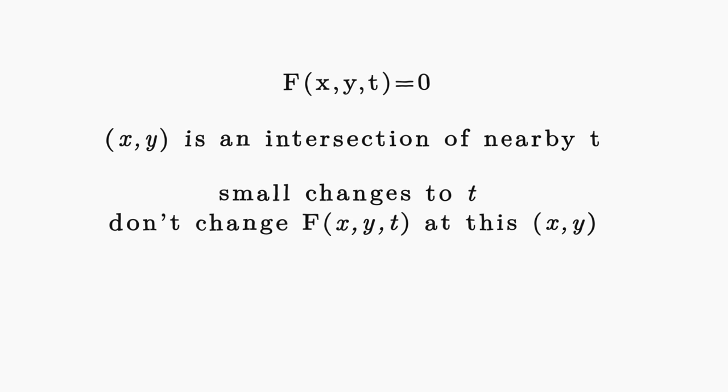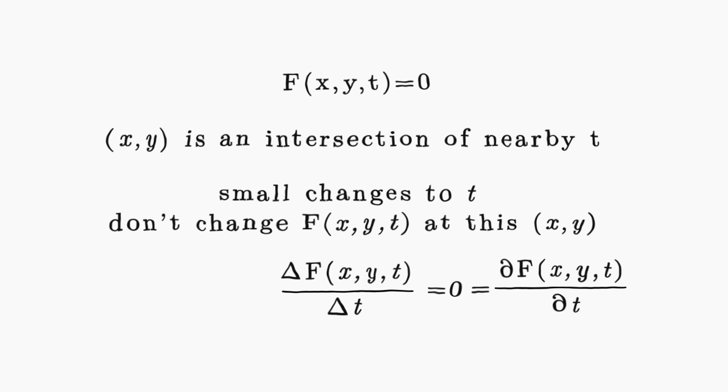So if for this point, small changes in t result in small changes in x and y, well, we're comparing a small change in f to a small change in t. That comparison, that's a derivative. More specifically, the partial derivative with respect to t, since we hold xy constant. So when the partial derivative of f with respect to t is zero, it means that changes in t don't change x and y at all, which is to say that the infinitesimally adjacent curves are intersecting. The partial derivative gives us the specific relationship to describe x, y, and t where this happens.